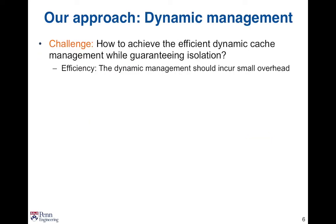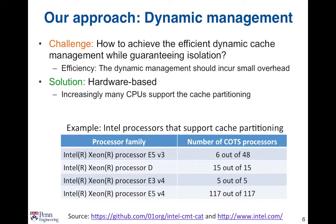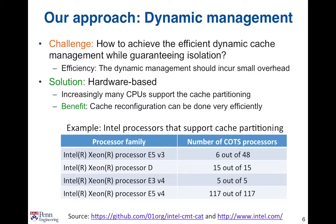Now the question becomes how to achieve the dynamic cache management efficiently while still guaranteeing cache isolation. We observe that in recent years more and more commodity processors have started to support cache partitioning in hardware. For example, there are hundreds of Intel processors supporting the cache allocation technology, which is a hardware-based cache partitioning technique. This hardware-based cache partitioning mechanism allows the system software to reconfigure the cache very efficiently. So we decide to leverage this new hardware to achieve dynamic cache management.